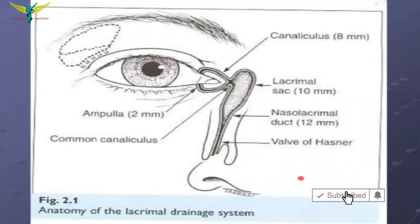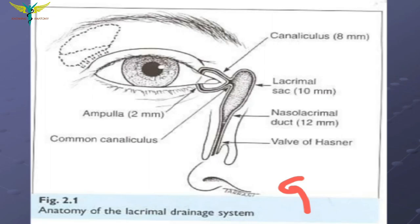The lacrimal apparatus consists of the lacrimal glands and the lacrimal passages. This is the lacrimal drainage system, in which you can see the lacrimal passages like the lacrimal punctum, the lacrimal canaliculus, the lacrimal sac, and the nasolacrimal duct. Near the drainage there is a valve of Hasner, which regulates the opening of the nasolacrimal duct.